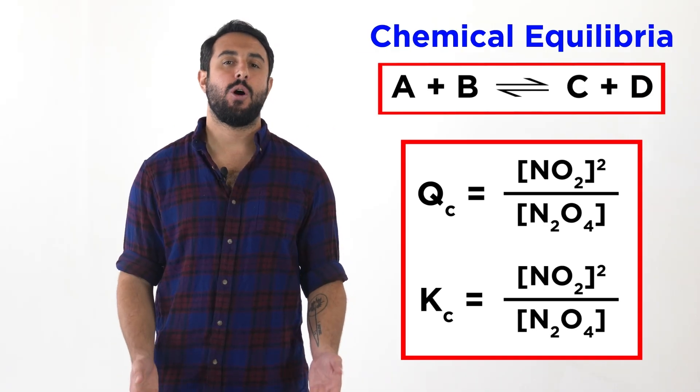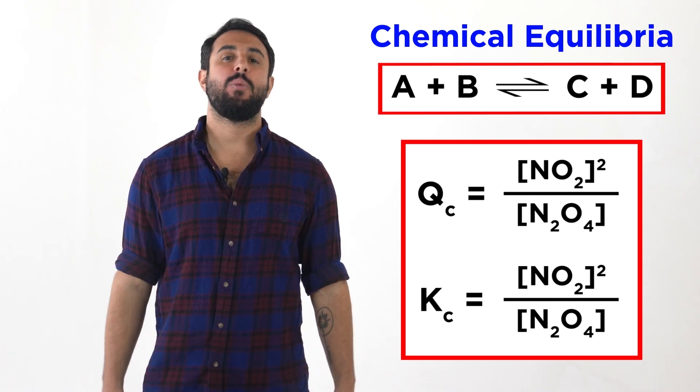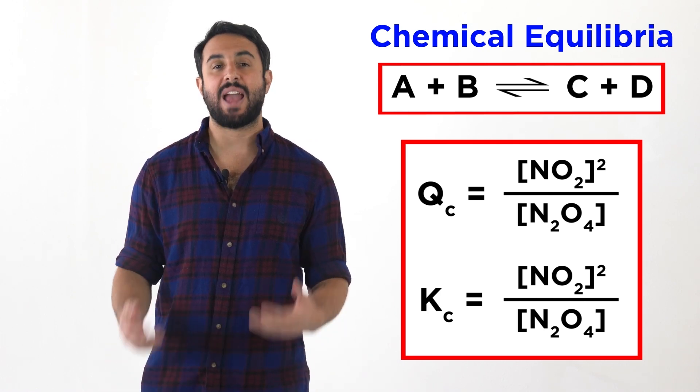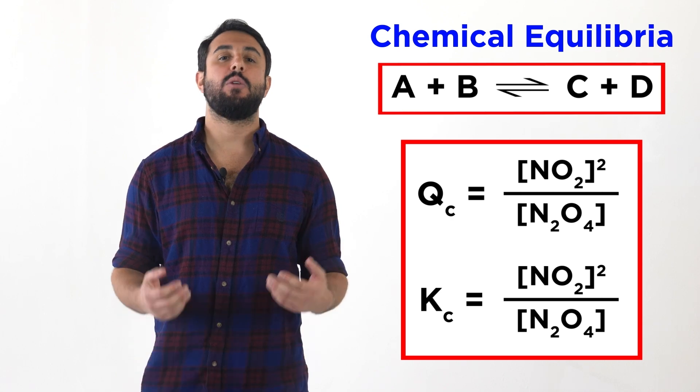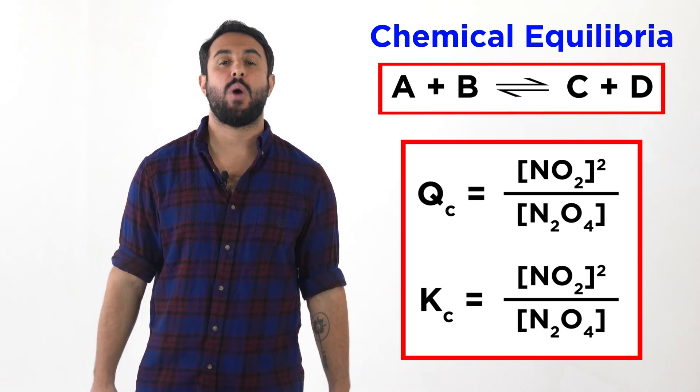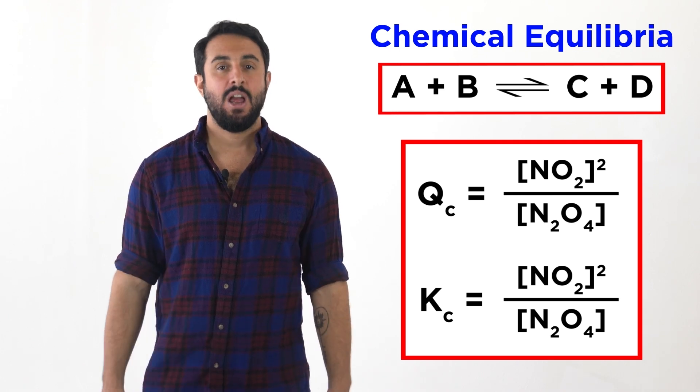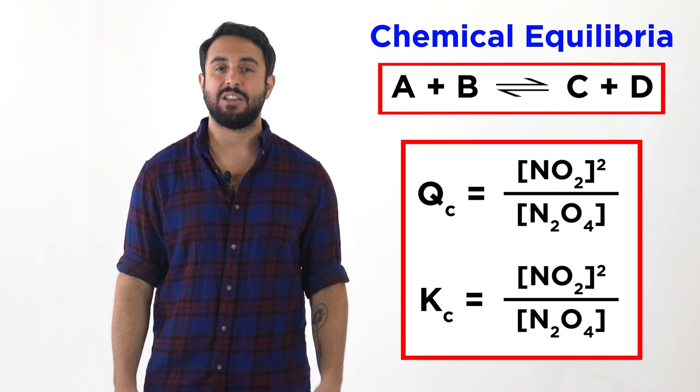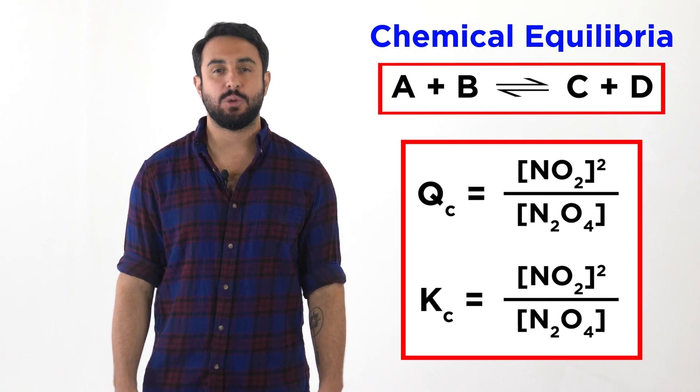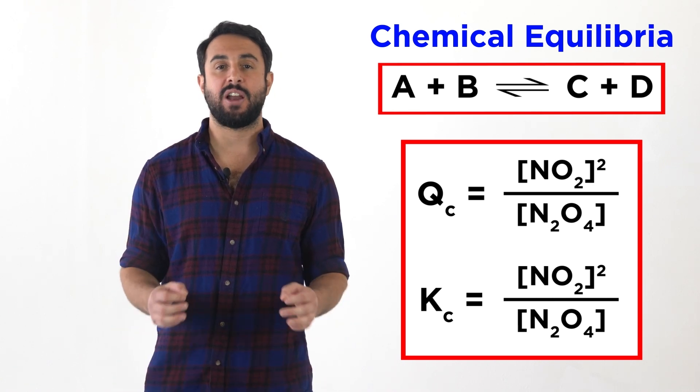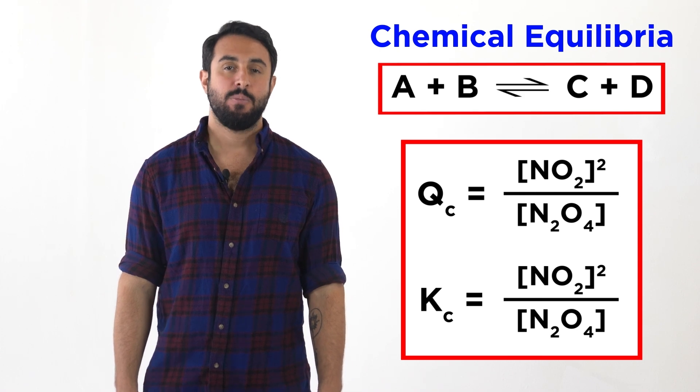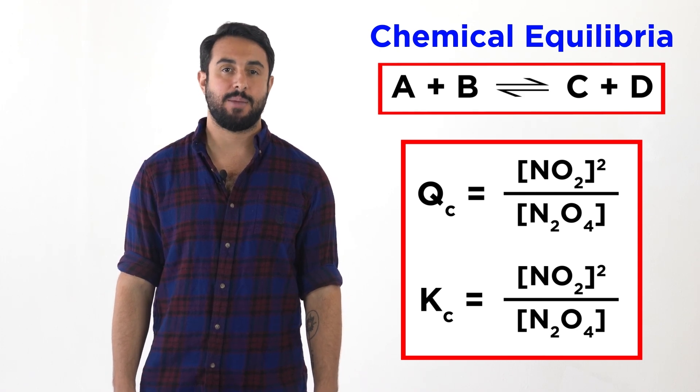So we now know what equilibria are, and we understand the relationship between the reaction quotient Q and the equilibrium constant K, as well as how to generate the expressions for Q and K. Additionally, we should be able to calculate Q or K given an equilibrium and all the relevant equilibrium or non-equilibrium concentrations. Professor Dave for Chegg, see you next time!